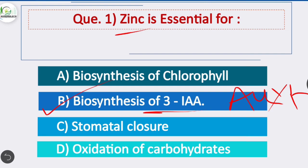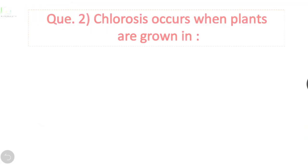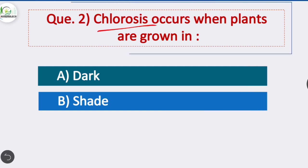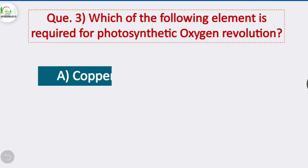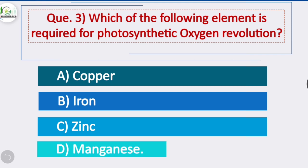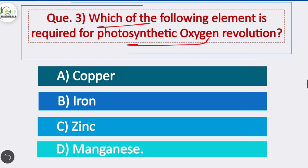Question 2: Chlorosis occurs when plants are grown in various media where there is mineral deficiency — chlorosis will occur. Question 3: Which of the following element is required for photosynthetic oxygen regulation? Option D is correct — manganese is required for photosynthetic oxygen regulation.